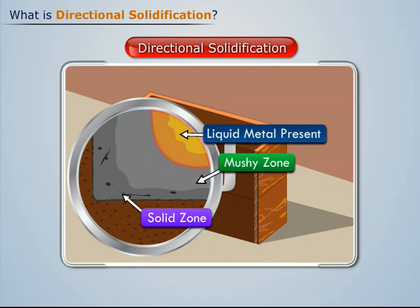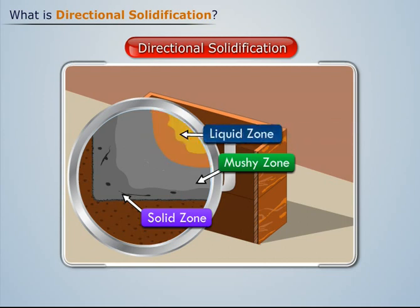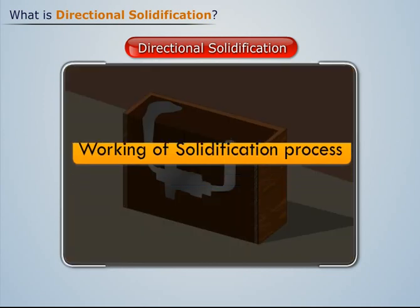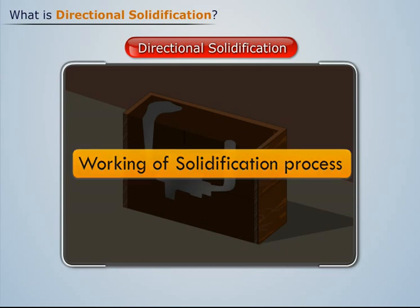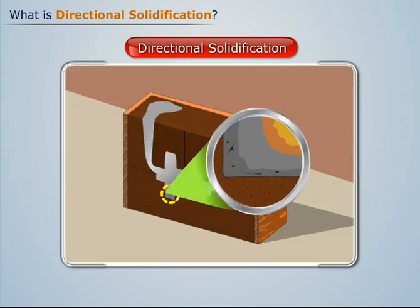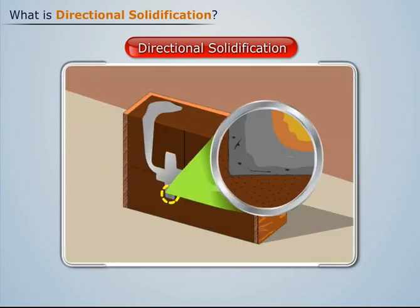Above this mushy zone, the metal exists in liquid form. The region where this liquid metal exists is referred to as the liquid zone. Let's now place our focus on the solidification process.